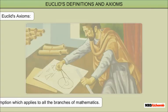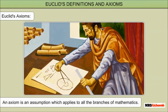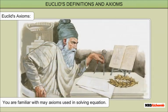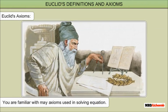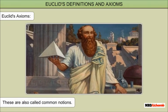Euclid's Axioms: An axiom is an assumption which applies to all the branches of mathematics. You are familiar with many axioms used in solving equations. These are also called common notions.